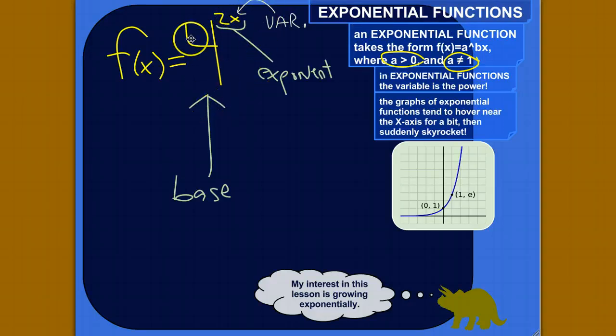These different parts have different names. The constant is called the base. This is the base of an exponential function. So in this function, 4 is the base, and then this part up here is called the exponent.